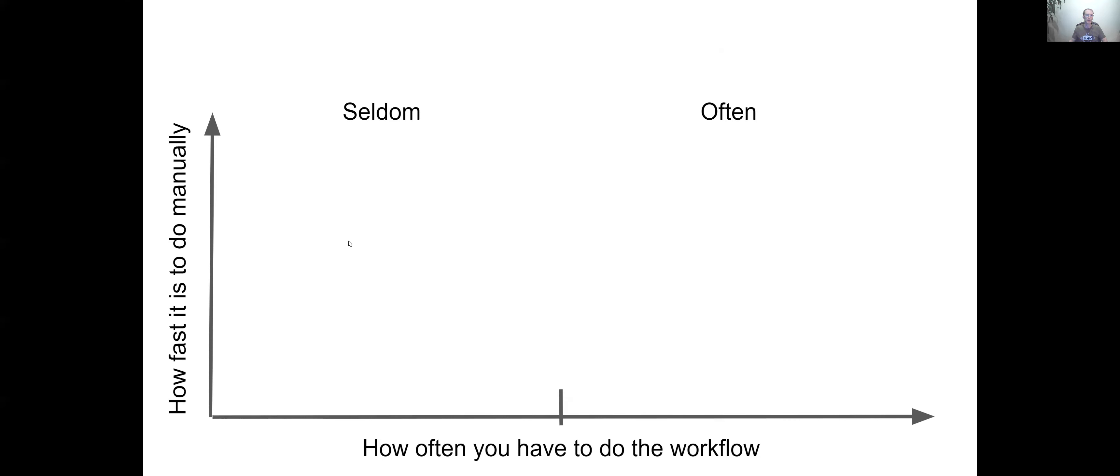Then the other thing we can consider is how fast it is to do manually. So again, there's a whole spectrum here. Sometimes it's really slow and takes forever to do it manually. Sometimes it's kind of in the middle and sometimes it's super fast. By manually, I mean not with the assistance of some sort of software program. We're having to cut and paste things manually or we're having to click and drag and drop something into a new place or we're having to upload a file and hit submit and then upload the next file and hit submit. So without Python, that's what I mean by manually. We can split that in half too.